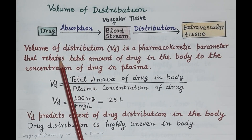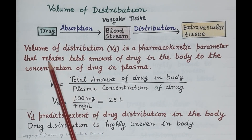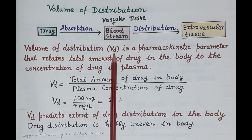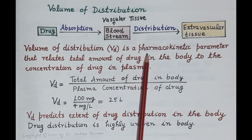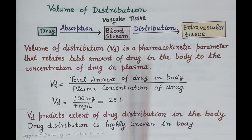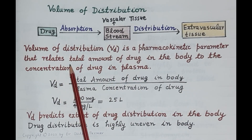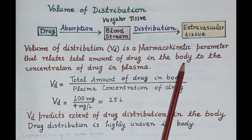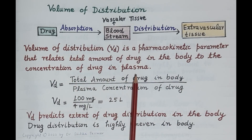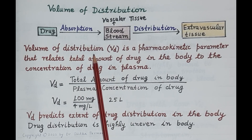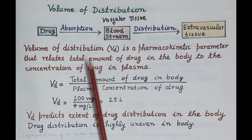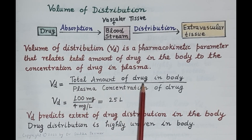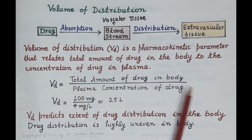Volume of distribution, represented as Vd, is a pharmacokinetic parameter that relates the total amount of drug in the body to the concentration of drug in the plasma. Volume of distribution is a theoretical concept — it is a ratio between total amount of drug in the body to plasma concentration of the drug.